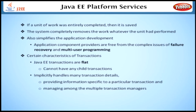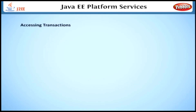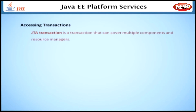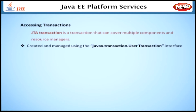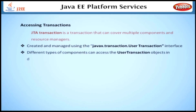Let's look at accessing transactions. A JTA transaction is a transaction that can cover multiple components and resource managers. JTA transactions are created and managed using the javax.transaction.UserTransaction interface. The different types of components can access the user transaction objects in different ways.